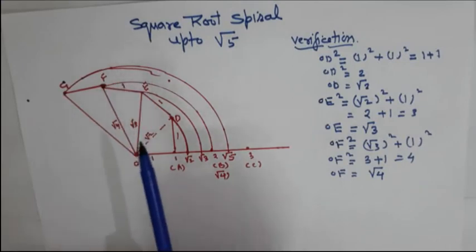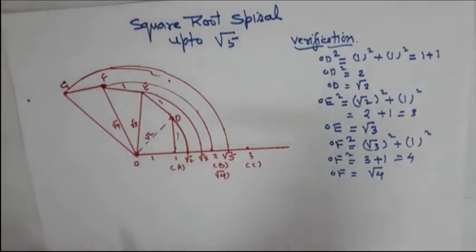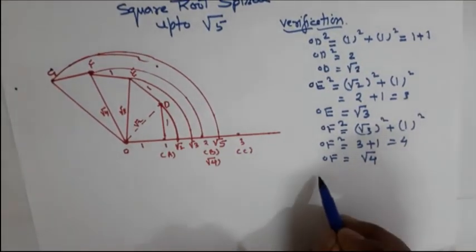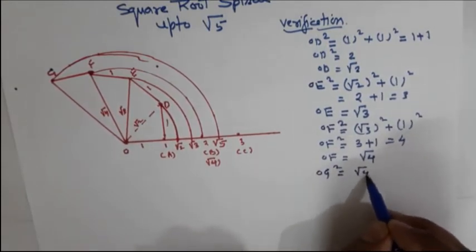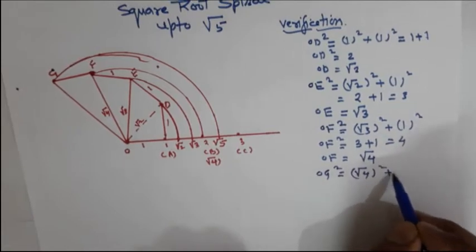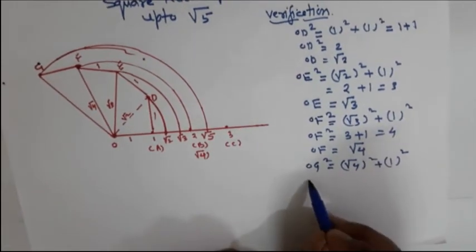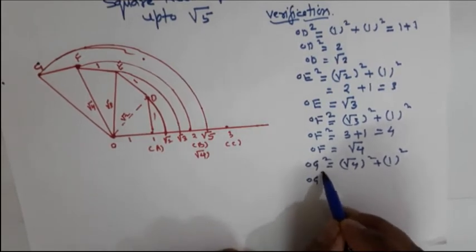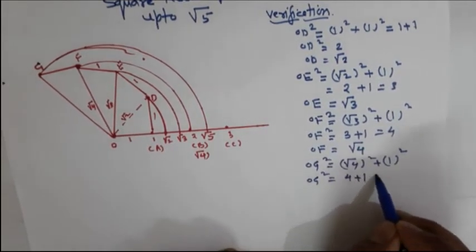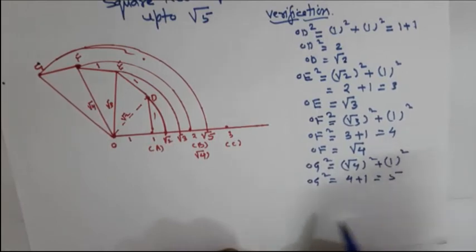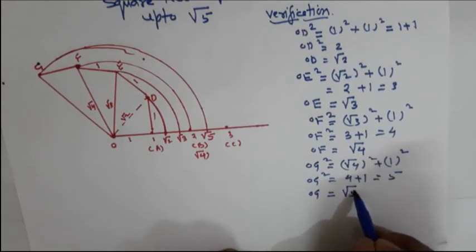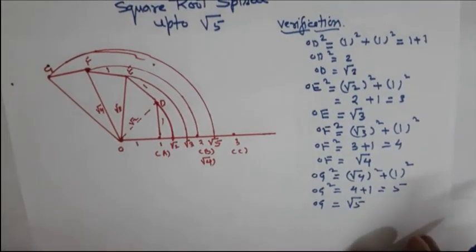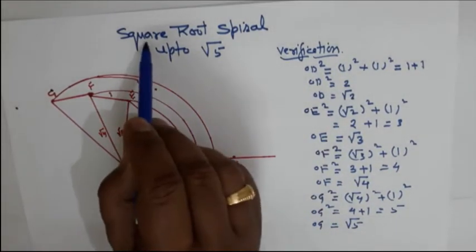Now see the verification: OG² = (√4)² + 1² = 4 + 1 = 5, so OG = √5. This completes the square root spiral up to square root of 5.